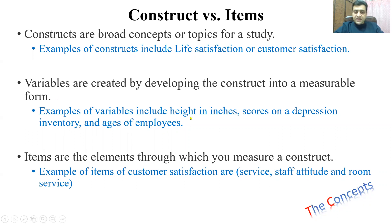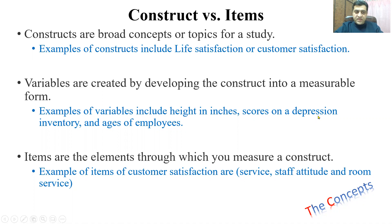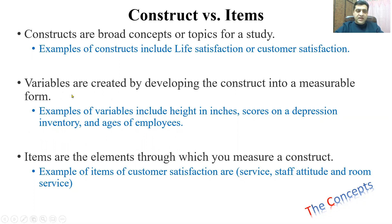Examples of variables include height in inches, because if you take height from different people it will vary from one person to another — that is why we call it a variable. If you talk about sources of depression, different people feel depression from different factors, so this may also vary. Inventory in different stores may also vary, and ages of employees as well. You can also talk about health, or the number of cigarettes a person smokes — the moment you go from one person to another collecting data, the value of the variable will change.